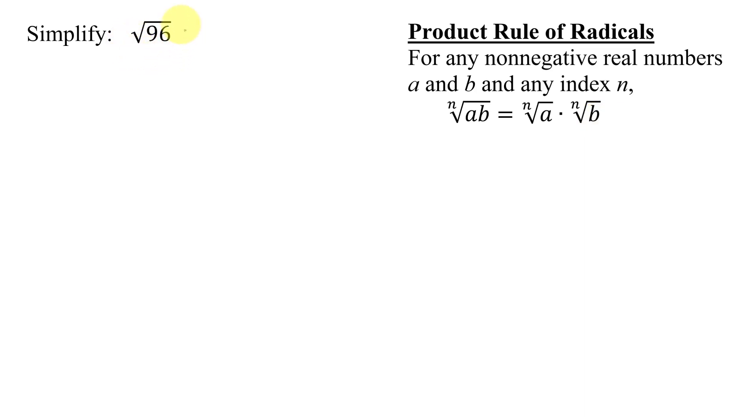Now in this case, we have a radical that doesn't have an index, but remember that means with square roots, there's an implied index of 2 here, so we know n equals 2 and the square root of a times b equals the square root of a times the square root of b. We're going to use this rule once I've factored my 96 into factors that are perfect squares and non-perfect squares.